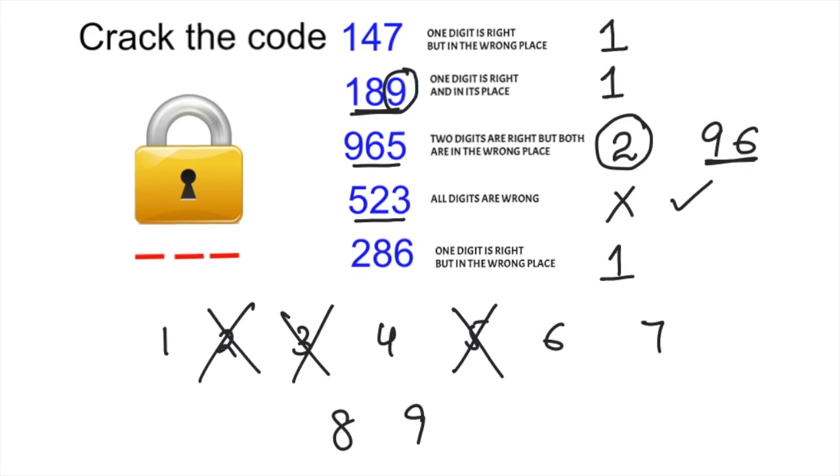That means 1 and 8 are also not correct. So you can cancel 1 and 8. Only 9 is correct and it's in its place. So that means our code will be 9. We can put 9 at the 1's place.